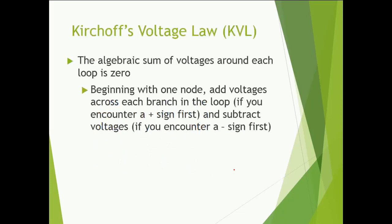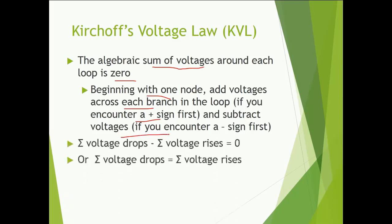Now, the main topic: Kirchhoff's Voltage Law, KVL. The algebraic sum of voltages around each loop is zero. Beginning with one node, add voltages across each branch in the loop — add if you encounter a positive sign first, subtract if you encounter a negative sign first. That is: summation of voltage drops minus summation of voltage rises equals zero, or equivalently, summation of voltage drops equals summation of voltage rises.